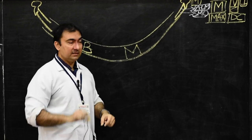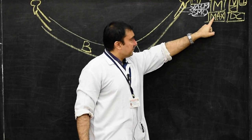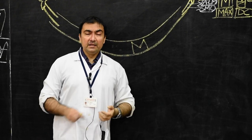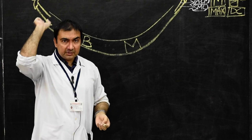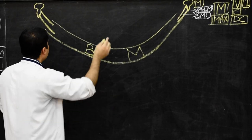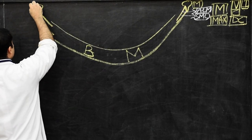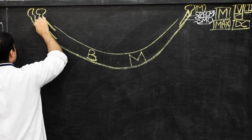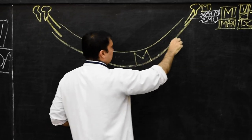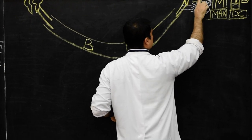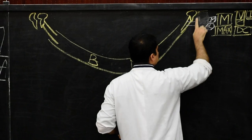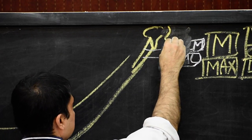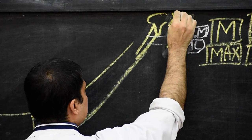Now, the maxilla was the dorsal component. From the maxillary component, the dorsal part will develop into — as we recollect from splanchnocranium — the incus. Please draw this incus.